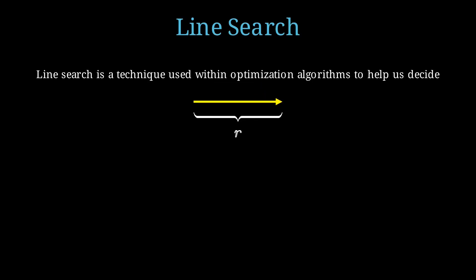Line search is a technique used within optimization algorithms to help us decide how far we want to move in a given direction, so we can reduce the objective function, or in this context, the loss function.